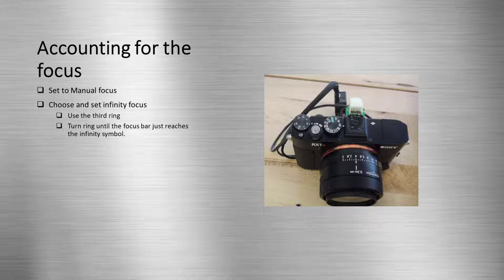Then you need to set the focus range by using the second ring, choose infinity range, and then fine-tune the focus to infinity using the third ring. Turn the focus ring on the camera lens until the slider on the focus bar just reaches the right end near the infinity symbol displayed on the camera LCD screen.